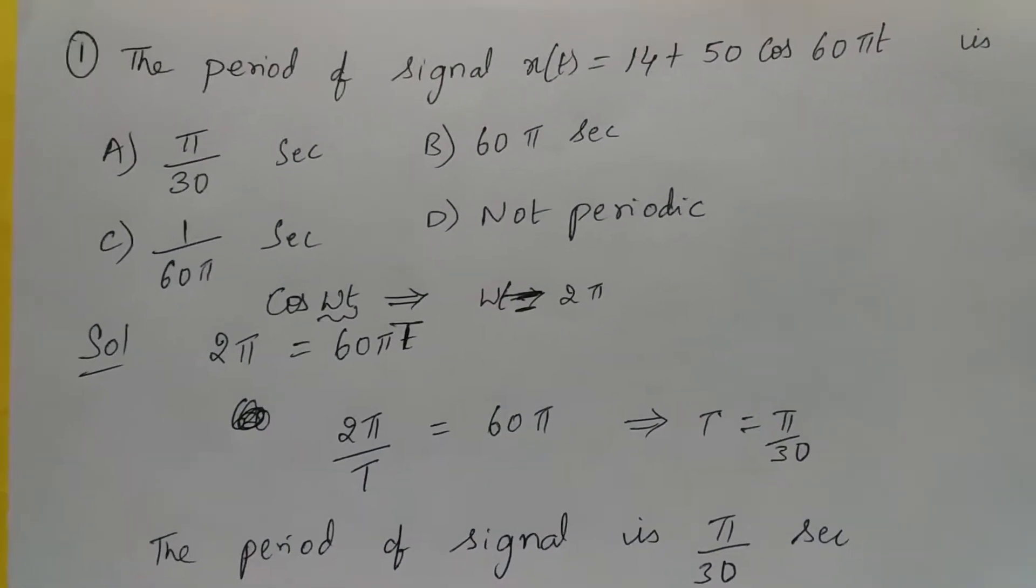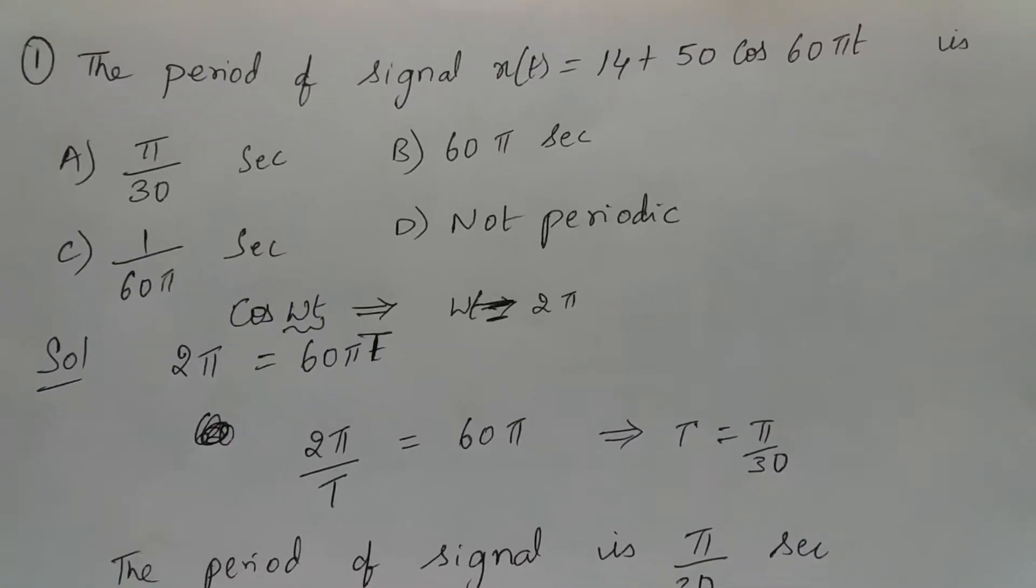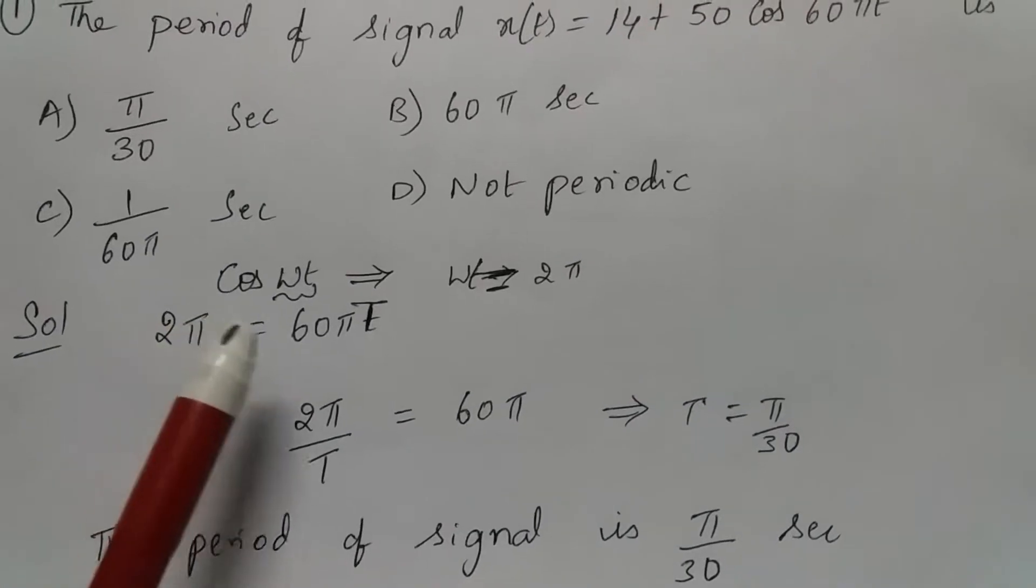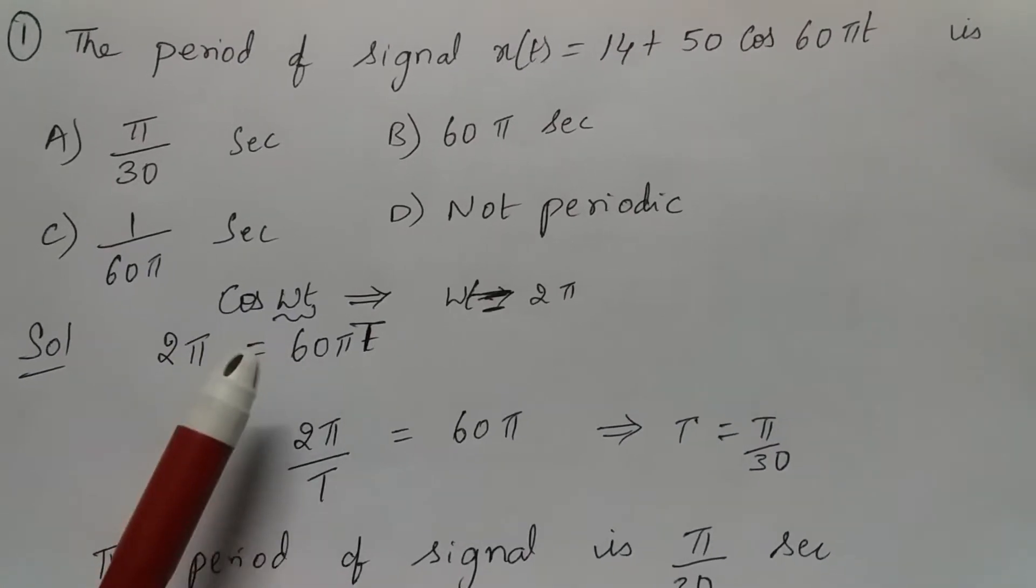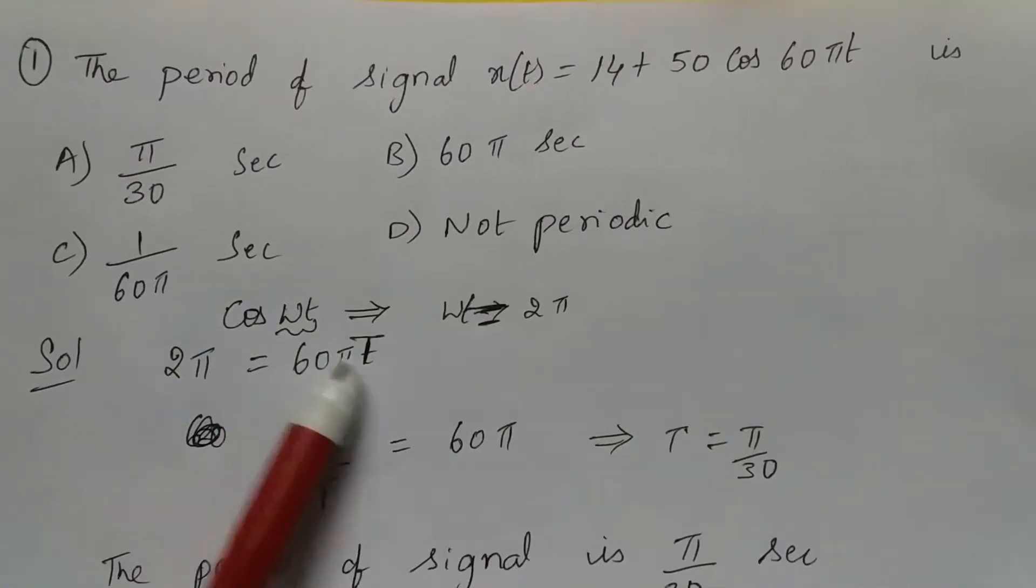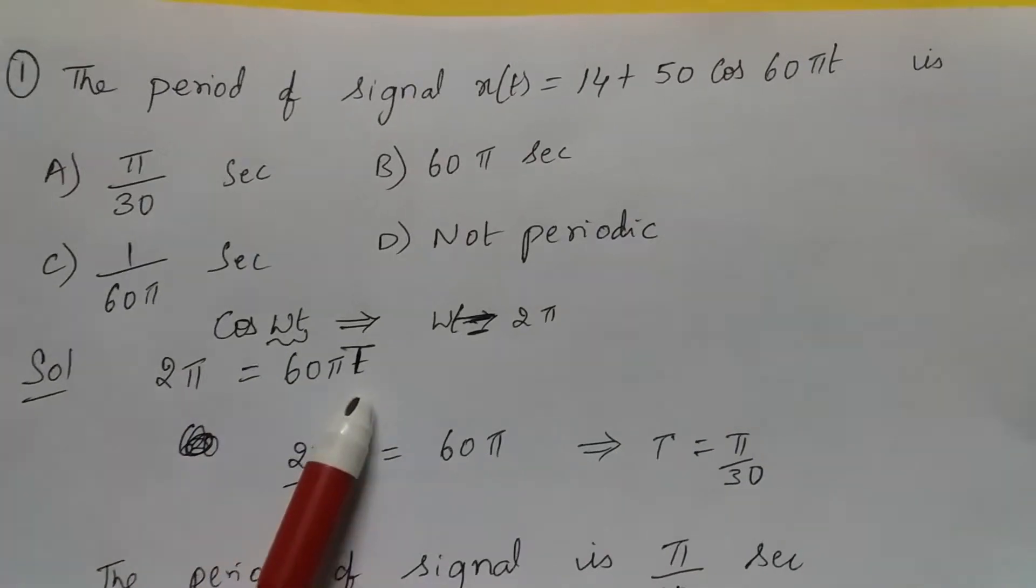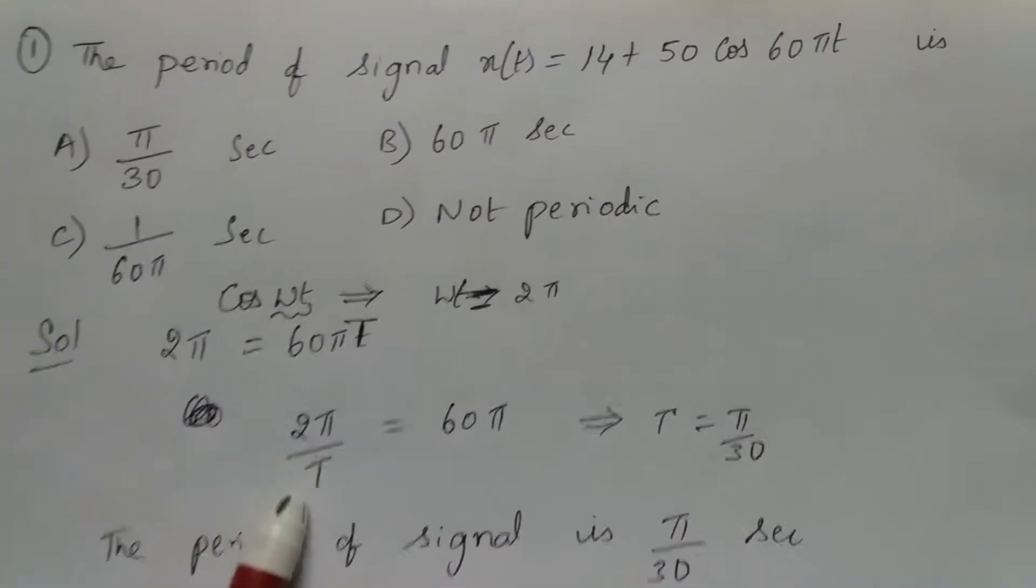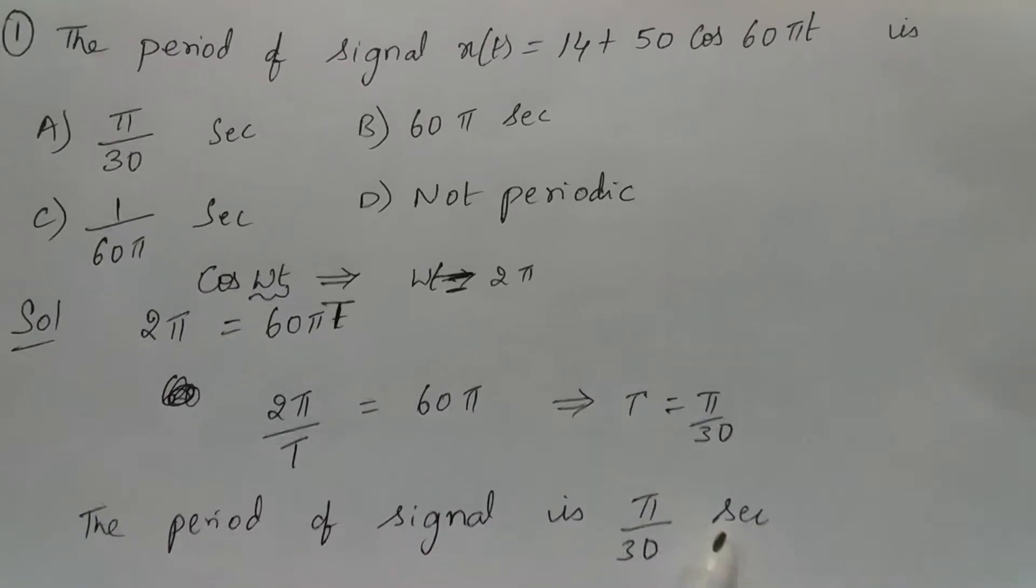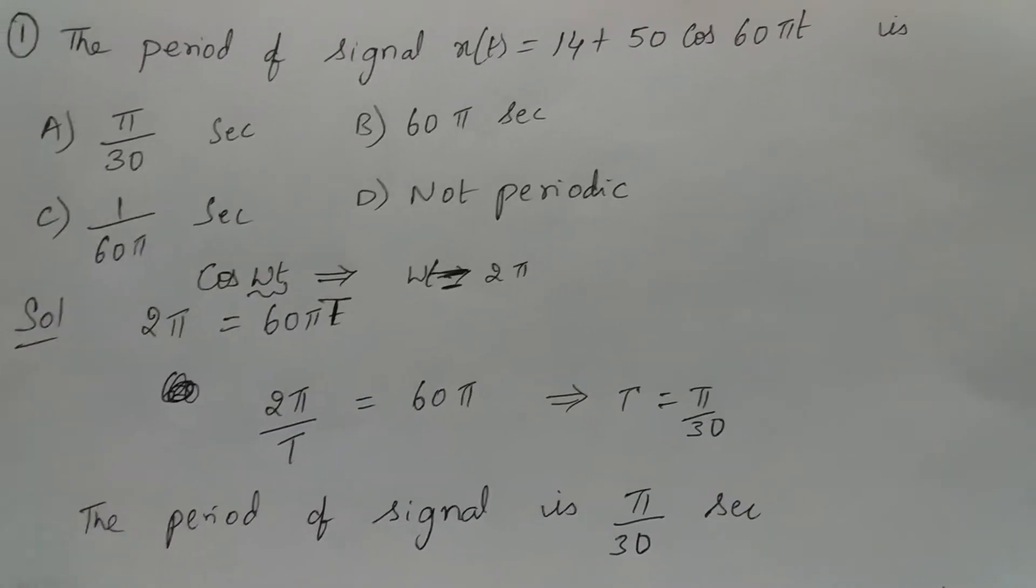Here there is a signal x(t) which is equal to 14 plus 50 cos 60π t. So we have to find out what is the period. So any cos signal or any sine signal, what is the maximum phase that it can take? It is 2π. So equate 2π is equal to 60π t. So 2π by t is equal to 60π and t is equal to π by 30. So the period of signal is π by 30. So A is the right option.